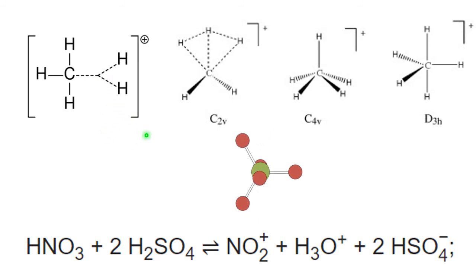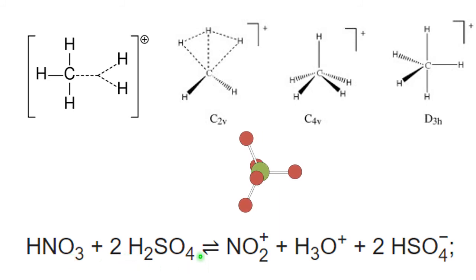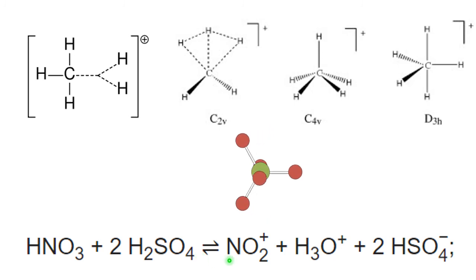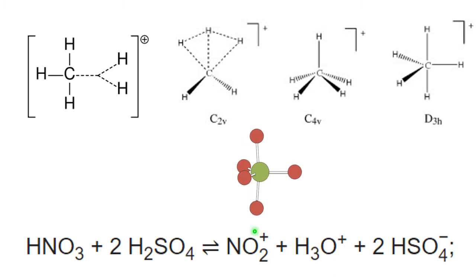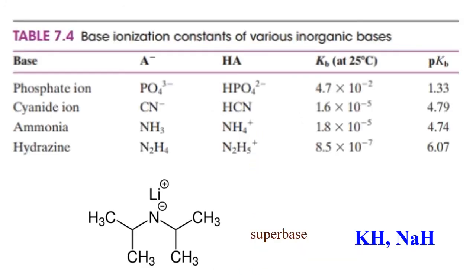Another very common protonation reaction may involve different hydrocarbons, and it is very important in oil processing. Nitric acid, when put in sulfuric acid, makes the NO₂⁺ cation and H₃O⁺. This NO₂⁺ cationic species is fantastically important in organic chemistry.